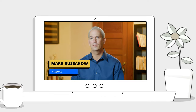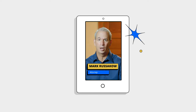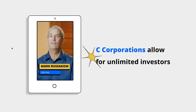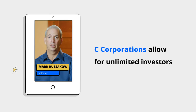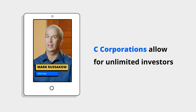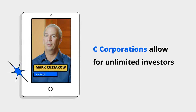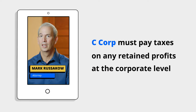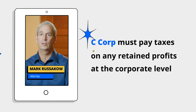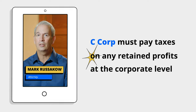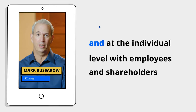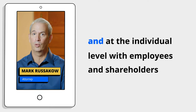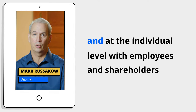Starting with the C-Corp, if you're considering taking your company public and having many invested shareholders, this is the entity type that would be a great choice because it allows for unlimited investors. But there is a big pitfall: when it comes to tax treatment, subchapter C of the Internal Revenue Service Code says that these corporations must pay taxes on any retained profits at the corporate level, and then again at the individual level when it's distributed to an employee or shareholder.